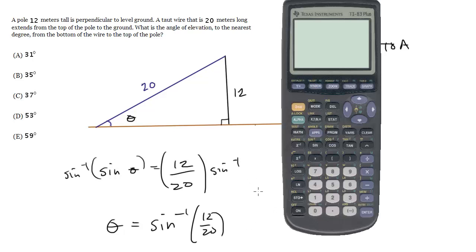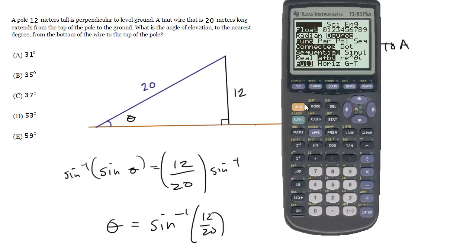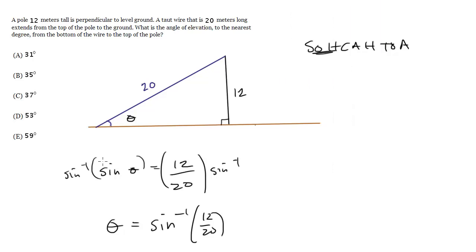I'll go to my calculator, make sure it's in degree mode, which it is. Finding the inverse sine of 12 over 20, I get 36.8, which rounds up to 37 degrees. That's choice C.